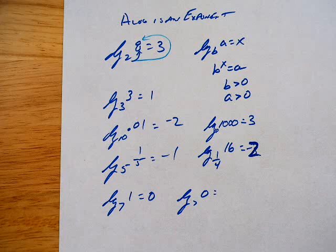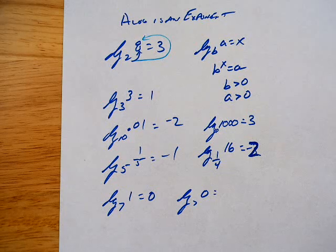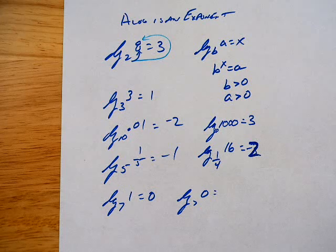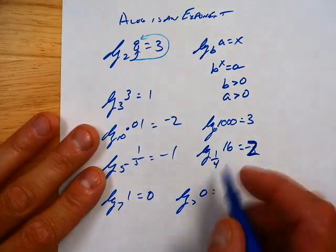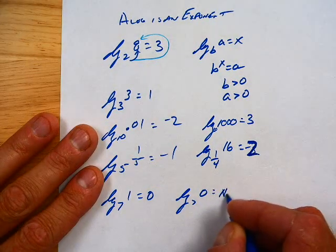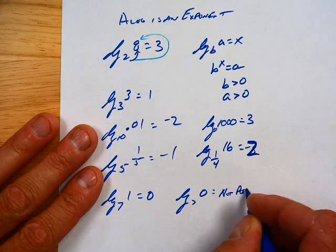Because 7, no matter what power I take 7 to, if 7 to a positive number is going to get bigger. 7, 49, 343. But if I take it to a negative number, it's going to divide. So 7, 1 over 7, 1 over 49, it'll never get to 0, so it's not possible.